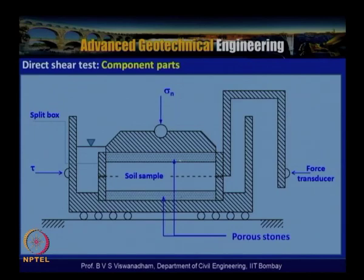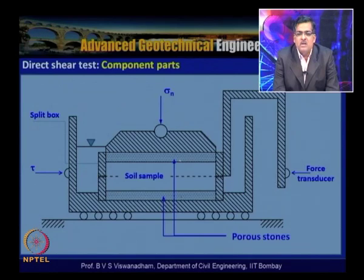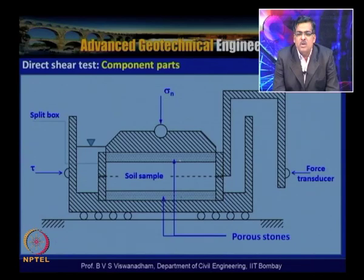A typical direct shear test configuration has a shear box with upper and lower halves. Tests can be performed under somewhat drained conditions, though pore water pressure cannot be measured. To keep failure at the predetermined plane, serrated plates are used at the base, with serrations perpendicular to the direction of shear.